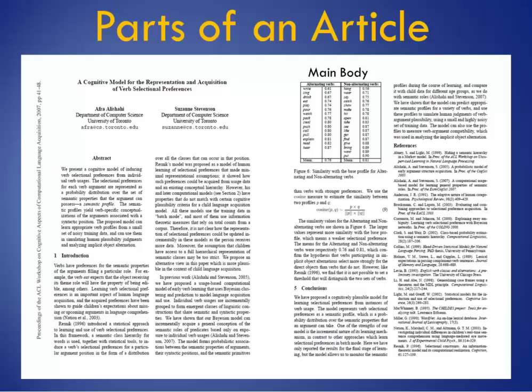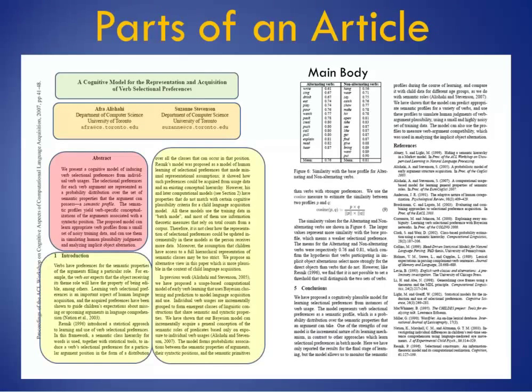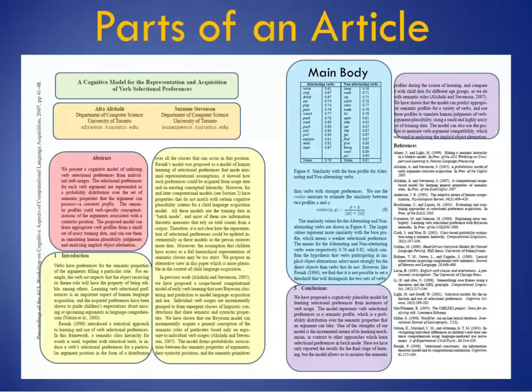Scholarly articles consist of the following sections: Title, Author's Names and Credentials, Abstract, Introduction, Main Body, Discussion, and Conclusion and References.